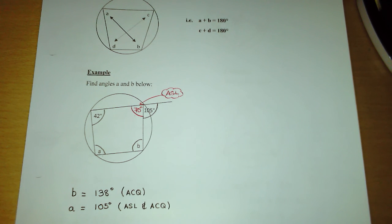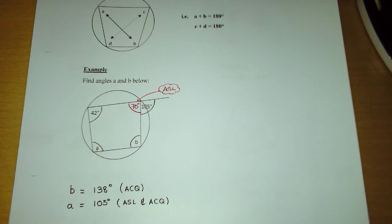And that's it. That is circle theorem three, angles in a cyclic quadrilateral.